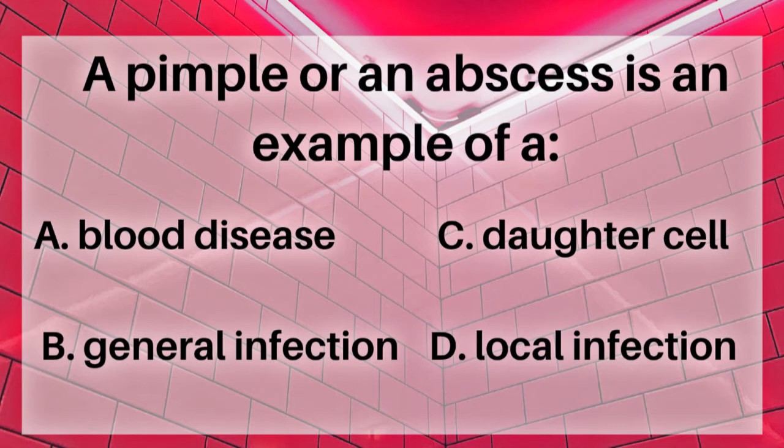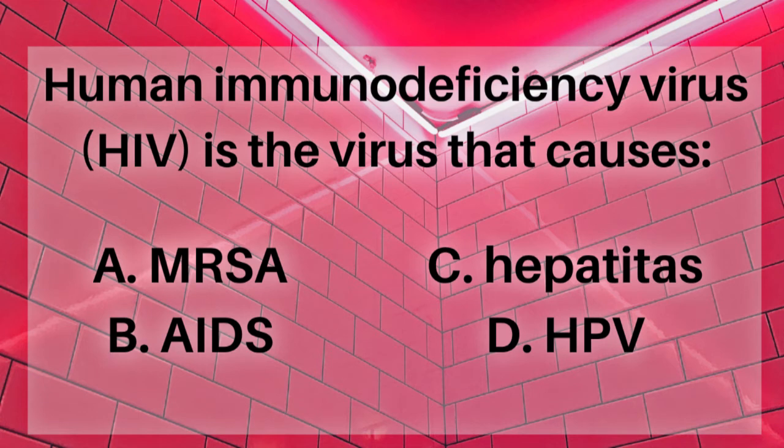A pimple or an abscess is an example of a: A. Blood disease, B. General infection, C. Daughter cell, or D. Local infection. The answer is D. Local infection.